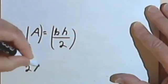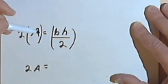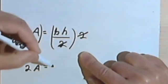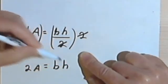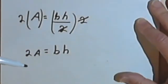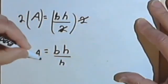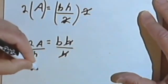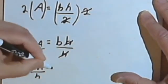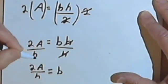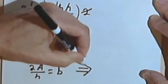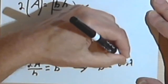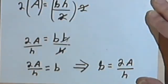That means I'll have 2a equals bh, and I wanted to solve for b, so I'll divide both sides by h. These h's will cancel. I'll have 2a over h equals b. And I can just swap the sides and write that as b equals 2a over h.